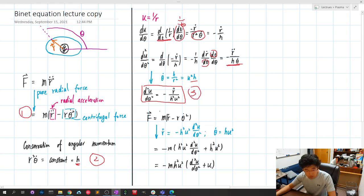We plug 2 and 3 into number 1. r double dot equals, pretty much put everything here to the left hand side, we have this expression. Then θ dot equals from equation 2, θ dot equals h u squared, since u equals 1 over r squared.